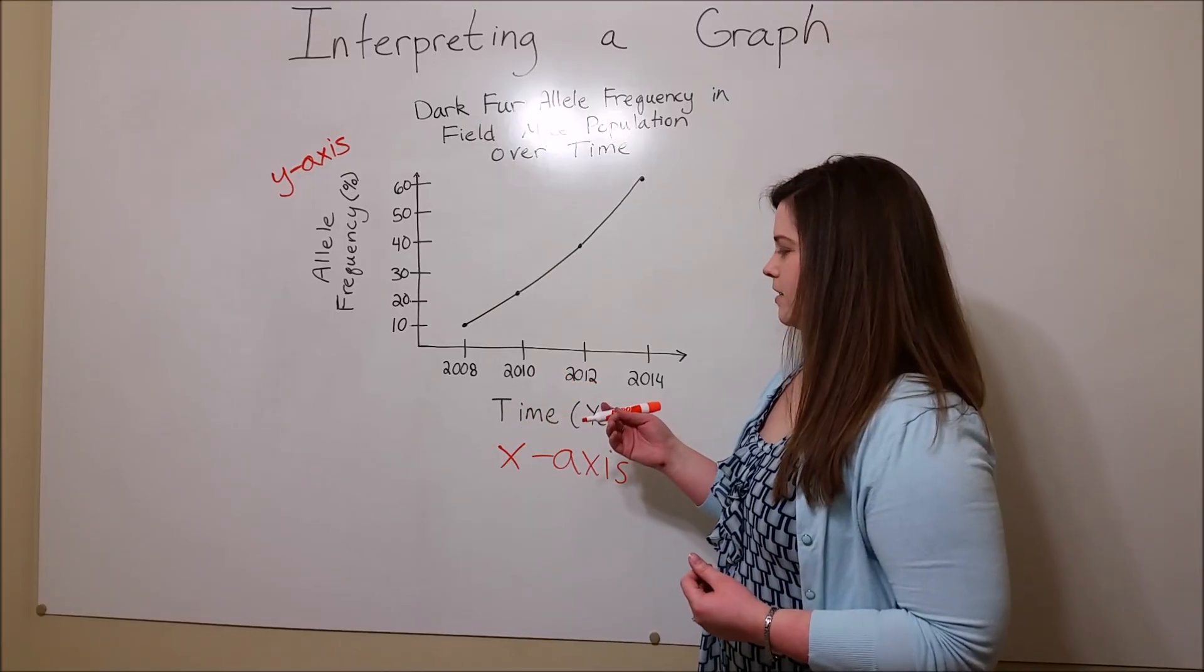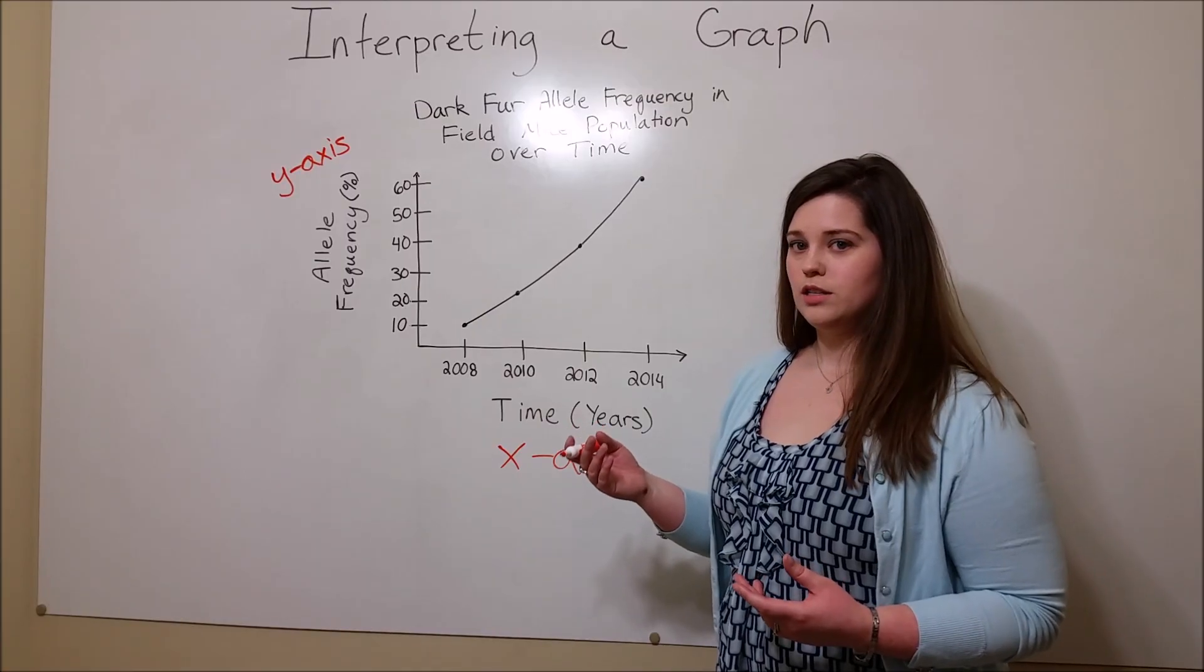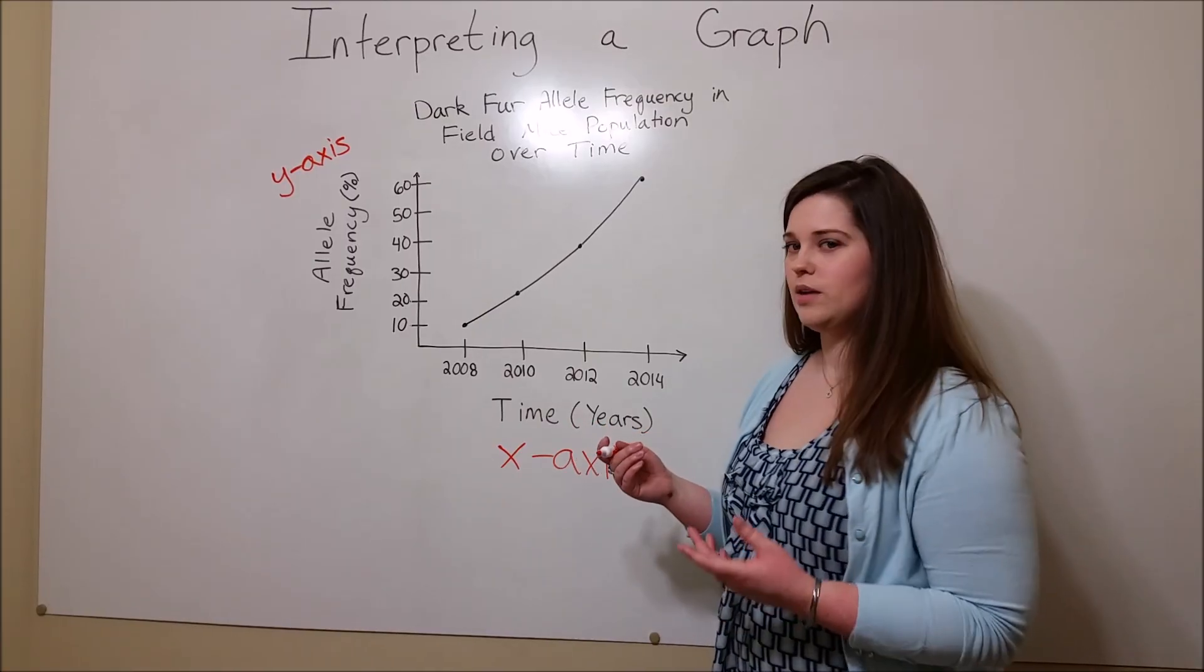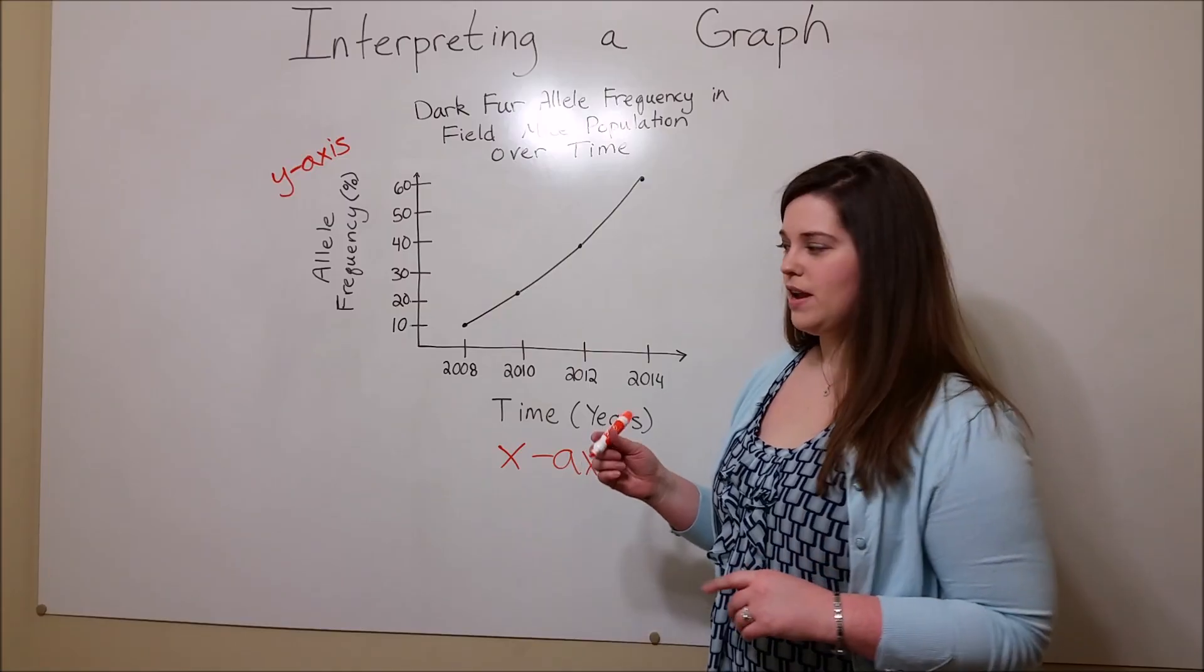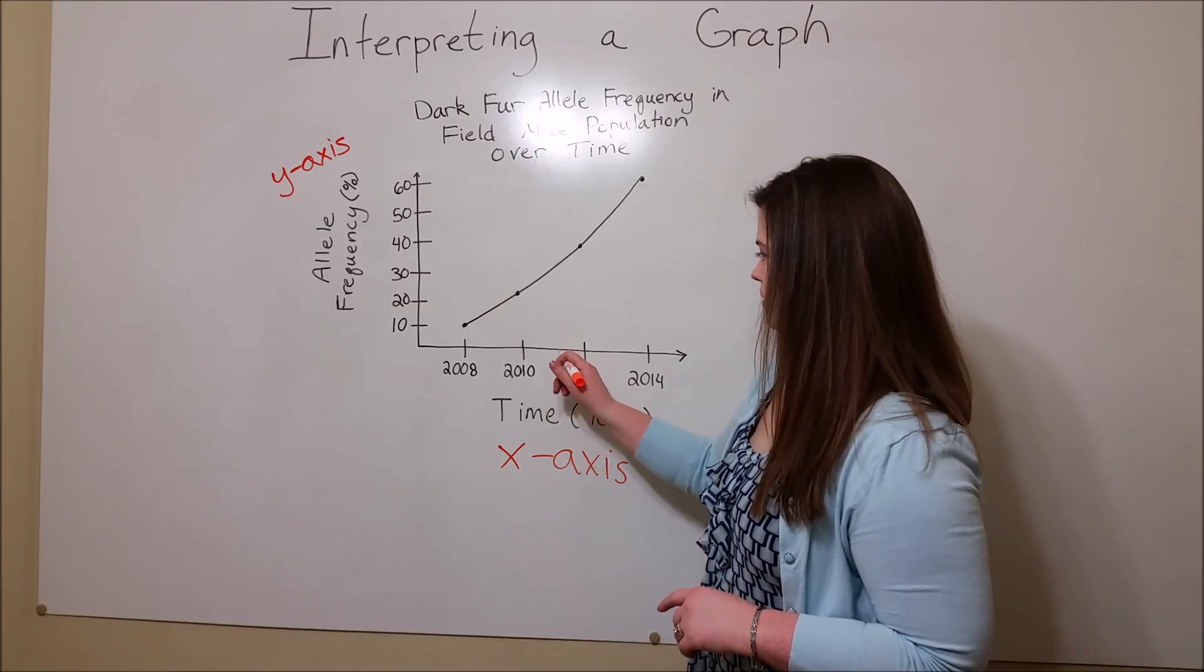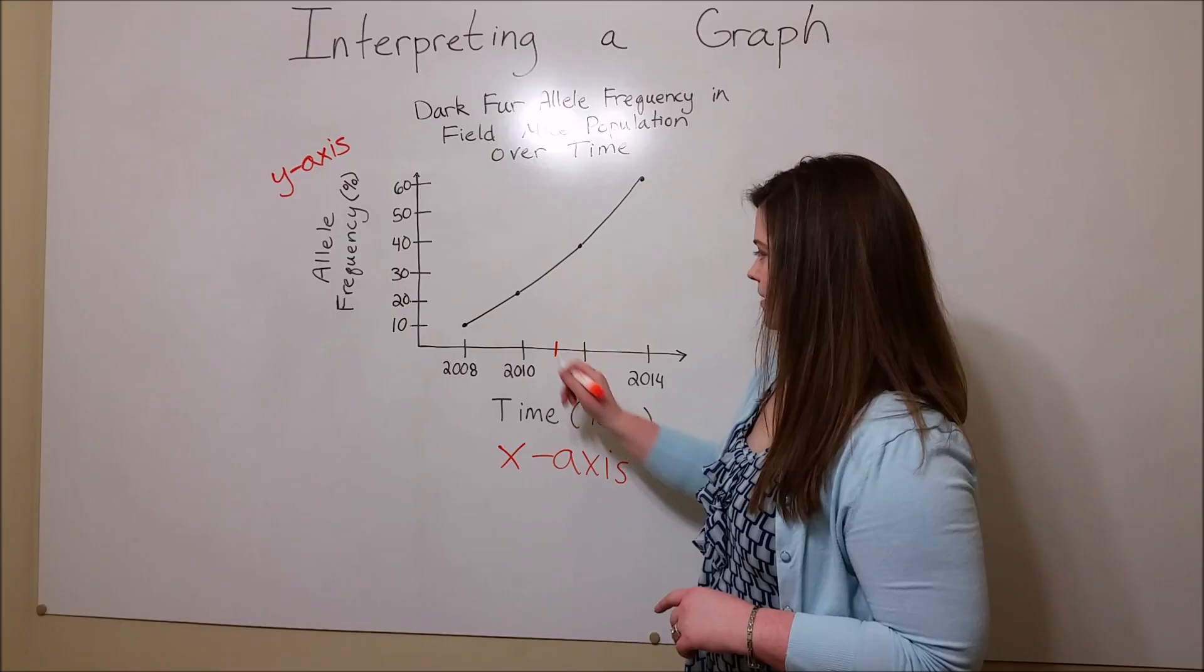If you were asked, for example, what was the approximate frequency of the dark fur allele in 2011, this is how you would find it. Go to 2011 on the x-axis.